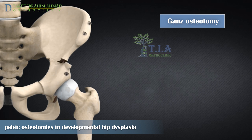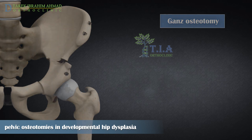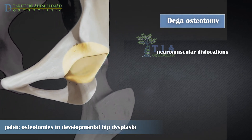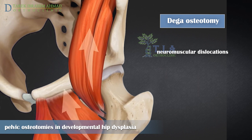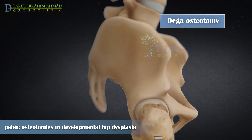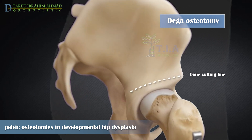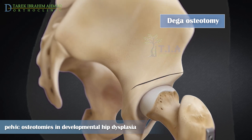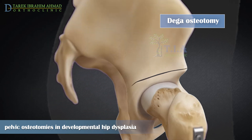The major disadvantage of Ganz osteotomy is the technical difficulty. Daga osteotomy is favored in neuromuscular dislocations such as cerebral palsy, in patients with posterior acetabular deficiency, and for severe cases. The osteotomy begins anteriorly on the interspinous ridge between the anterior superior and anterior inferior iliac spine. When viewed from the lateral cortex, it is curvilinear, starting just above the anterior inferior iliac spine, curving gently cephalad and posteriorly to end approximately 1 to 1.5 centimeters in front of the sciatic notch.